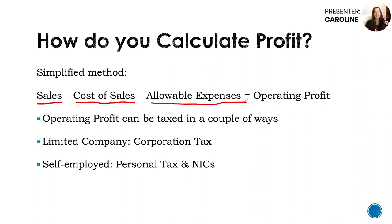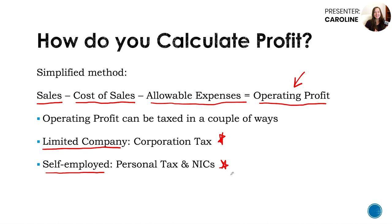Next, you take away allowable business expenses — things like accountancy fees, software you use to provide your service, and web hosting. I'll go through a full list of these shortly. Finally, you get the operating profit figure. This is taxed differently depending on how your business is set up. For a limited company it's corporation tax, while as a self-employed sole trader you pay personal tax and national insurance, because all profit from self-employed income is personal income — all of it, you can't pick and choose.